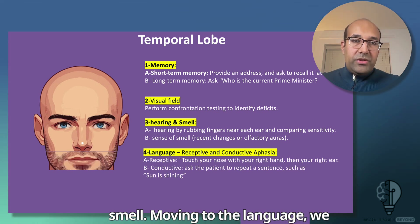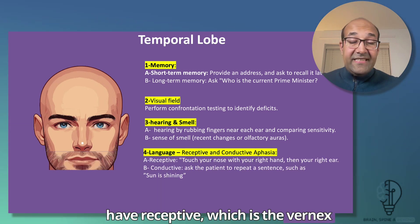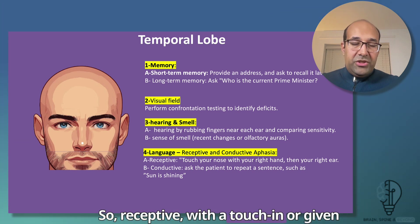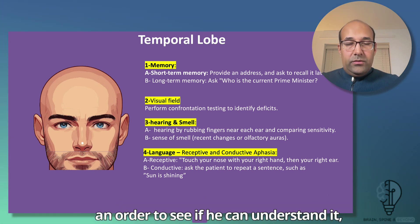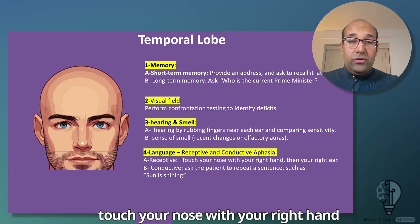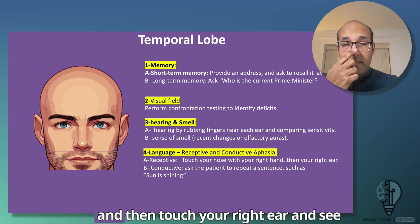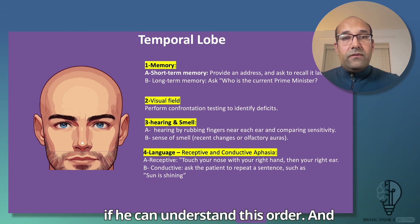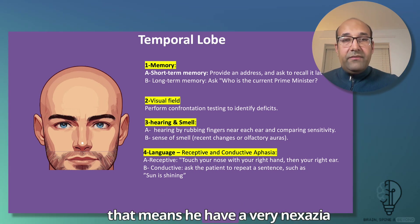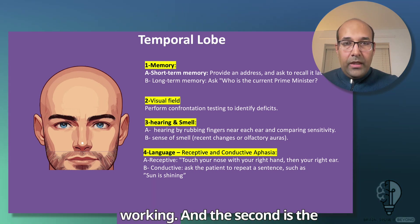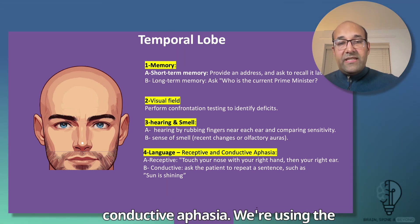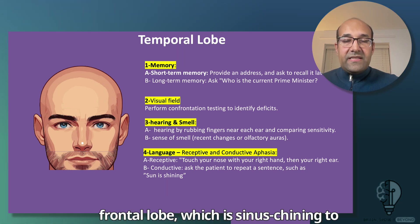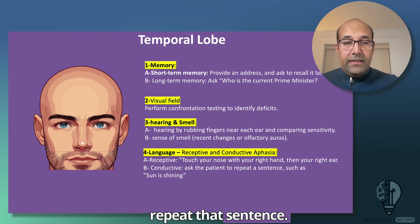For language, we assess receptive aphasia (Wernicke's area) and conductive aphasia. To test receptive function, give a two-step command such as 'Touch your nose with your right hand, then touch your right ear' — if the patient follows correctly, Wernicke's area is working. For conductive aphasia, we use repetition, asking the patient to repeat a standard sentence such as 'The sun is shining.'